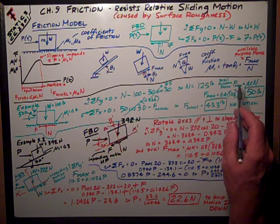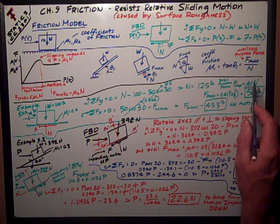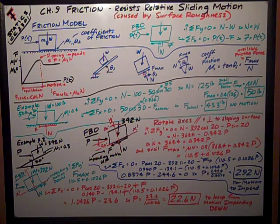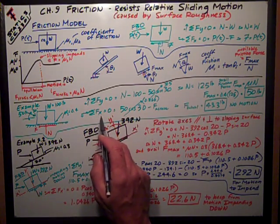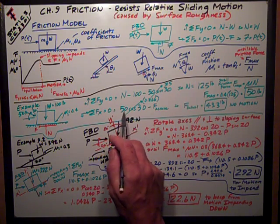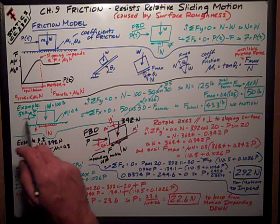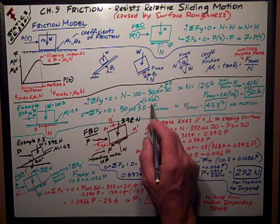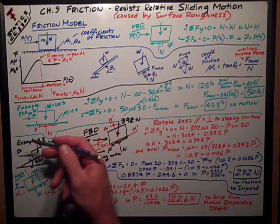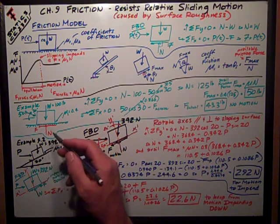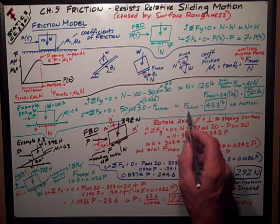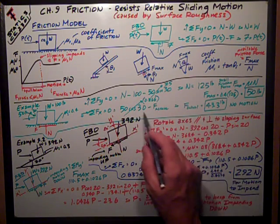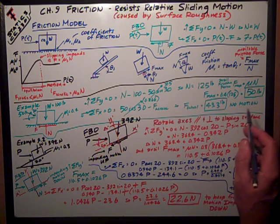So I have a maximum friction force, or available friction force, of mu times N — that's 0.4 times 125 pounds, which is 50 pounds. Now, if I do sum of forces in the x-direction, I have the horizontal component of this 50-pound force times cosine of 30, which is 0.866 times 50. The only thing in the x-direction is the friction force resisting the motion, so the actual friction force just matches the pushing force, which is 43.3 pounds. Therefore, no motion occurs.